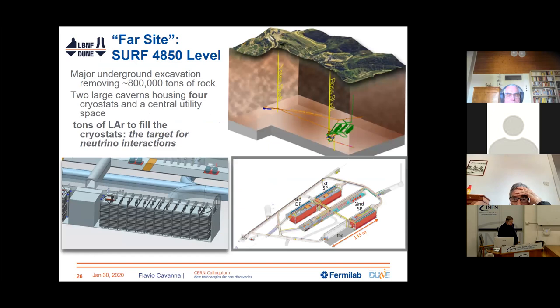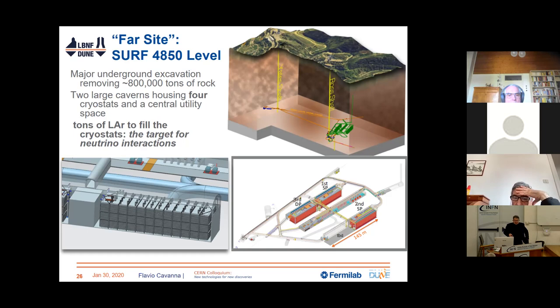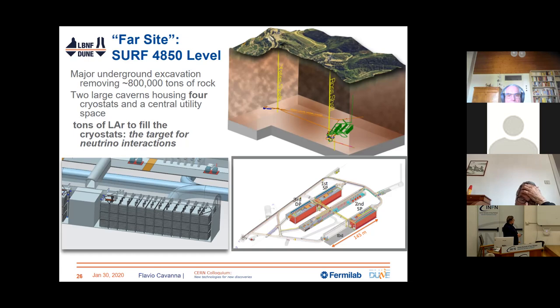The detectors are located in a gold mine in the Black Hills of South Dakota, 1,500 meters underground. This mine is a fantastic place, reaching 2.5 kilometers depth with about 600 kilometers of galleries. The galleries in the mine were not good for an experiment, so we are excavating large caverns — three big caverns in which the detectors will be placed, ultimately housing four different detectors.